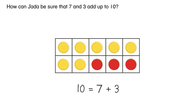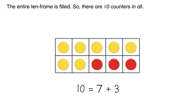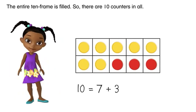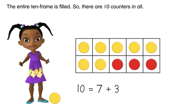How can Jada be sure that seven and three add up to ten? The entire ten-frame is filled, so there are ten counters in all. Maybe next time I'll flip over even more counters.